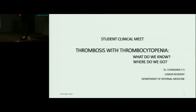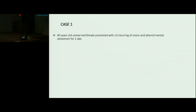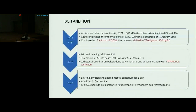I am going to present a case series of thrombosis with thrombocytopenia. Coming to the first case: a 40-year-old unmarried female presented with complaints of blurring of vision and altered mental sensorium for one day. Background history: in 2013 she presented to a local hospital with acute onset shortness of breath, for which CTPA was done, suggestive of thrombus in the main pulmonary artery extending to the left and right pulmonary artery. She underwent catheter-directed thrombolysis at CMC Ludhiana and was discharged on anticoagulation, which she continued till 2018.